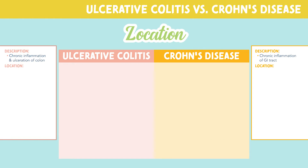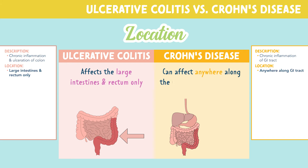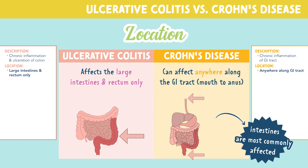Let's look at the locations in which we'll see symptoms appear. Ulcerative colitis affects the large intestines and rectum only, while Crohn's disease can affect anywhere along the GI tract, meaning from the mouth to the anus. But it's important to know that in Crohn's disease, the intestines are most commonly affected.